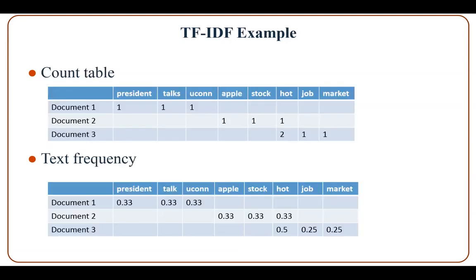Then we form a count table with the three documents on the rows and all the words on the columns. In the cells we indicate the count of the words. From the count table we compute the term frequency.